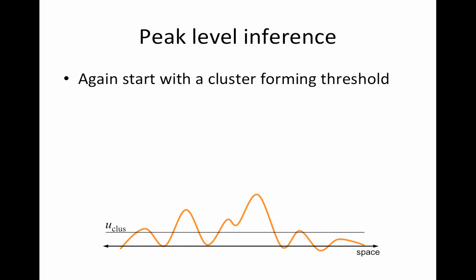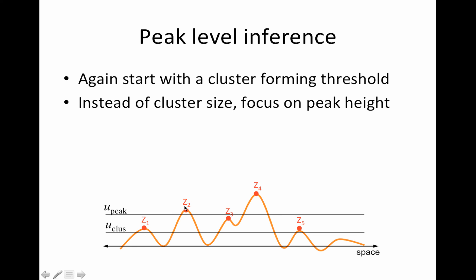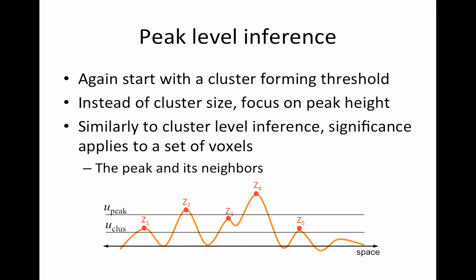Peak-level inference is similar to cluster-level inference in that you have two thresholds. So you start with a type of cluster-forming threshold. So here I have a threshold, that's a slightly different image, but we have these... I need more peaks in it. So then you identify the peaks. So they're basically these local maxima. And then once you have the peaks, you find a statistic for the peak size. And then you come up with a peak threshold. So the second threshold is based on some distributional properties about the peak. So in this case, only Z2 and Z4 would be significant. Z1, Z3, and Z5 would not be significant. Okay. So that is peak-level inference. It's very similar to cluster-level inference. The significance only applies to a set of voxels, the peak and its neighbors.